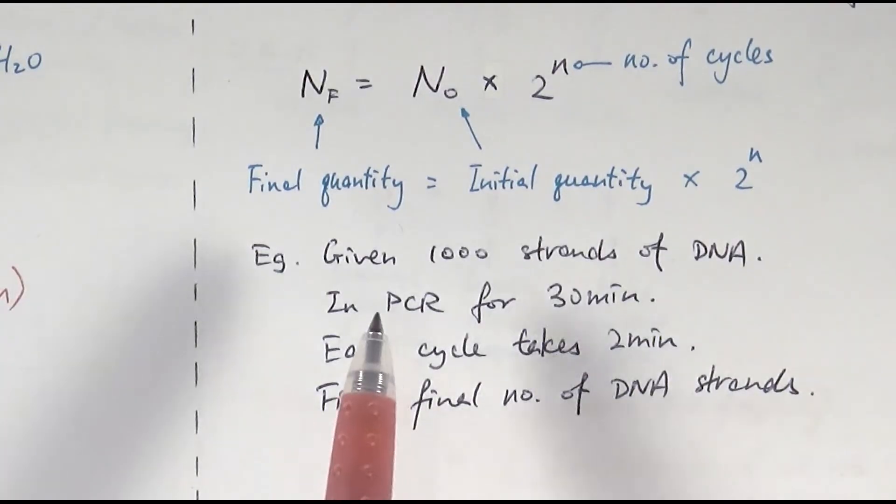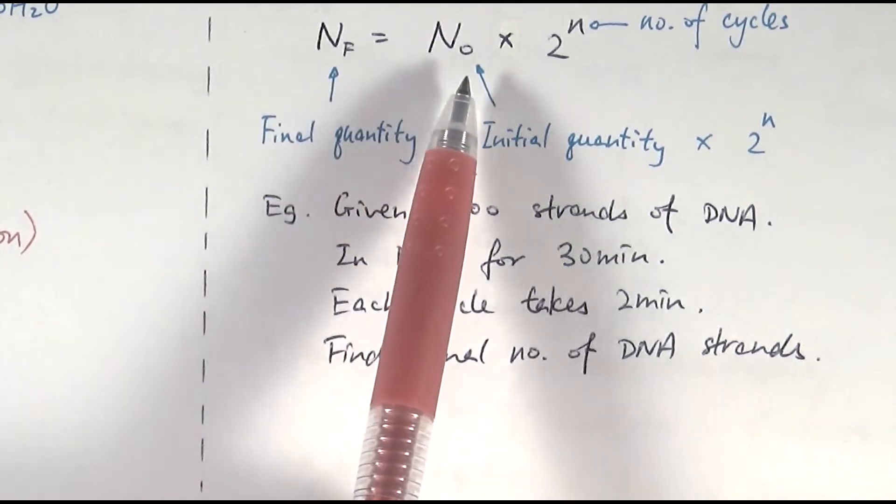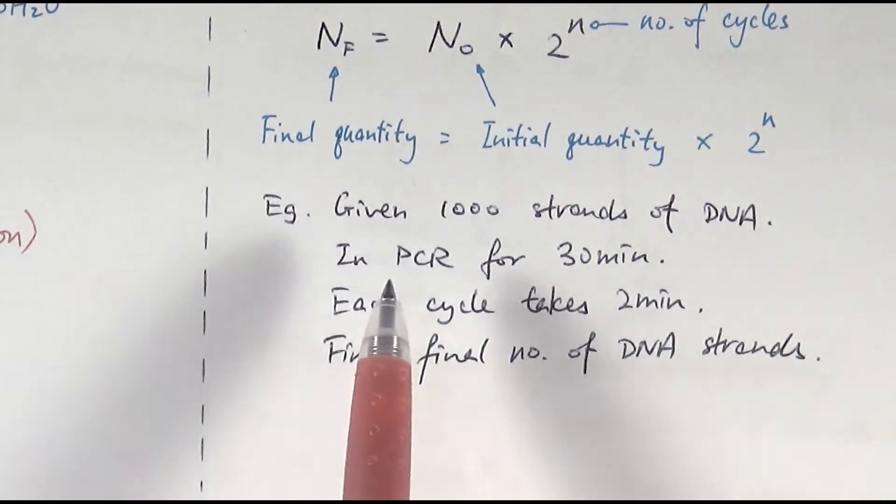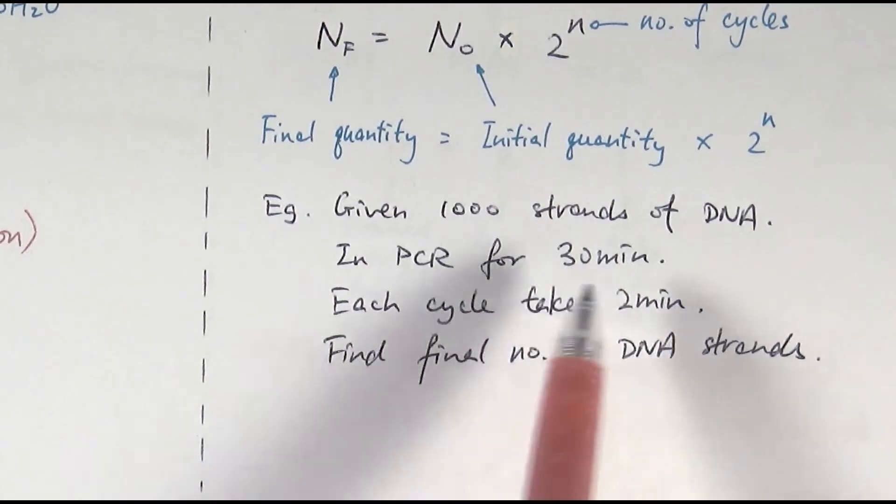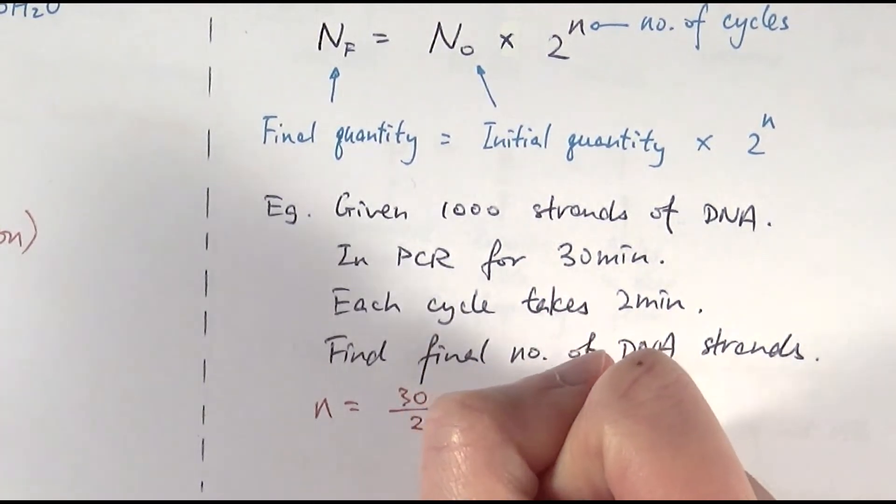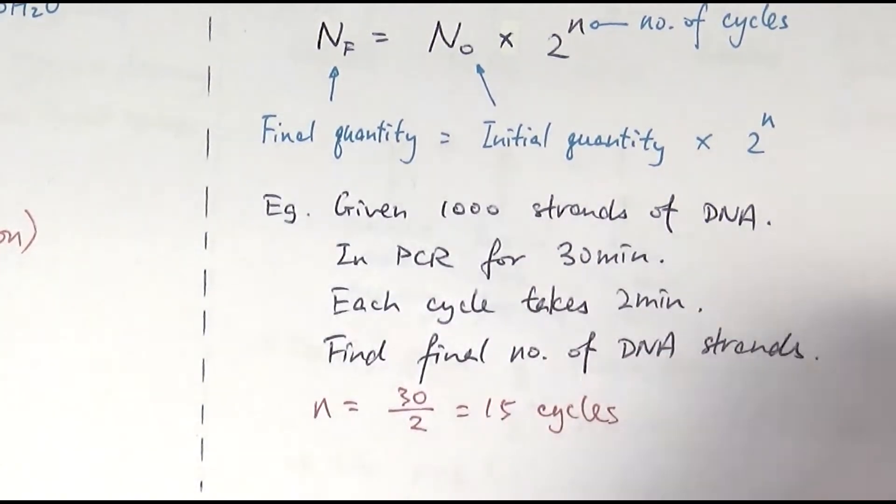So we can do a particular example here. Let's say you're given a thousand strands of DNA, and it's been put into the PCR or thermal cycler machine for 30 minutes. Each cycle of the PCR takes two minutes, and then you need to now find the final number of the DNA strands. So this is quite a classic question, so let's just break it down first. Now, if we look at the original equation, we need to find that. And we've got that one, which is a thousand. The thing that we don't know is n, the number of cycles, which we can work out here. So it's been running, it was ran for a total of 30 minutes, and each cycle takes two minutes. So the number of cycles really would be the total time divided by the time needed for each cycle. So in this case, two. So therefore, I would know that n equals 15. So we have undergone 15 cycles of PCR.